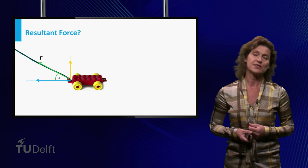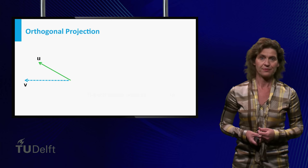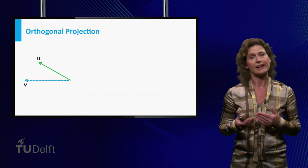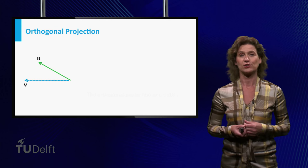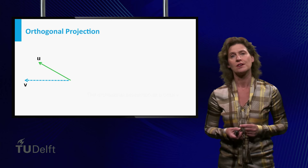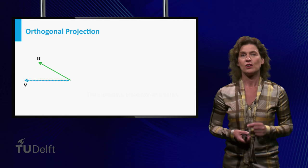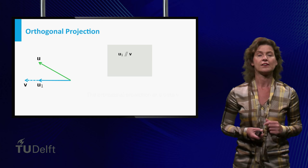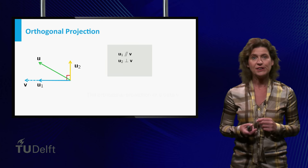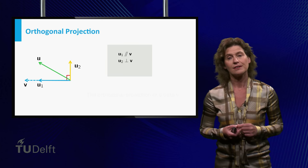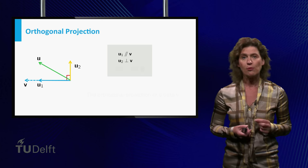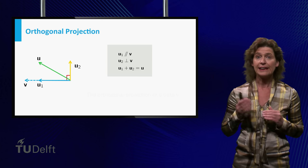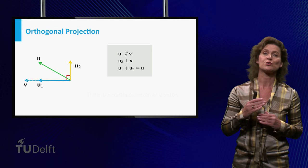In a general setting the situation is as follows. Given two vectors u and v, you want to find vectors u1 and u2 such that u1 has the same direction as v, u2 and v are orthogonal, and the sum of the blue vector and the yellow vector equals the green vector u.